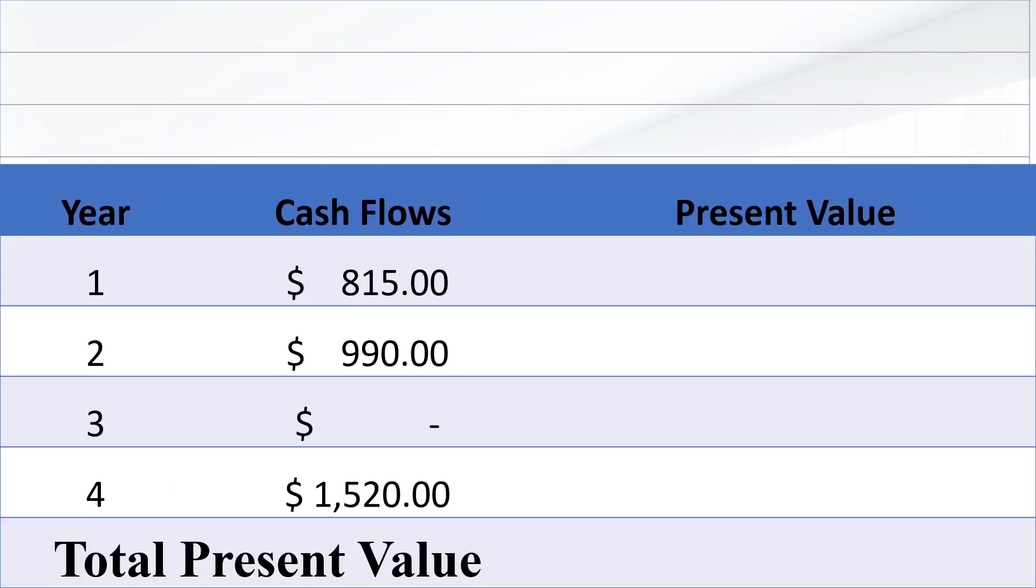In this question, based on these cash flows, we have to find the present values. Interest rate is 8.5%, compounding frequency is quarterly.